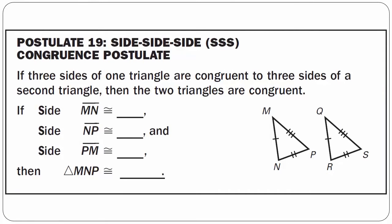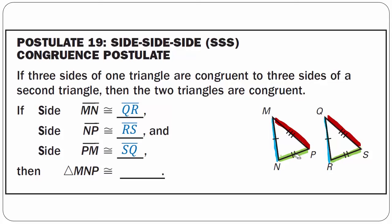Postulate 19, side-side-side (SSS) congruence postulate: if three sides of one triangle are congruent to three sides of a second triangle, then the two triangles are congruent. For example, line segment MN is congruent to line segment QR — they each have one tick mark. Line segment NP is congruent to line segment RS — they each have two tick marks. And line segment PM is congruent to line segment SQ — they each have three tick marks. So triangle MNP is congruent to triangle QRS using the side-side-side congruence postulate.